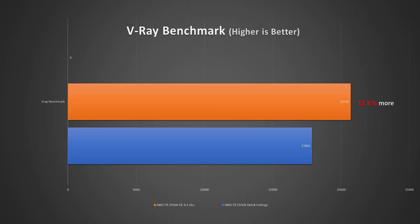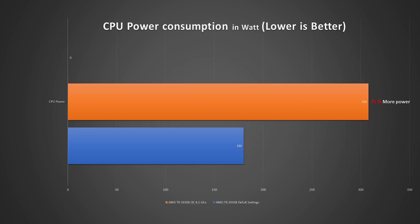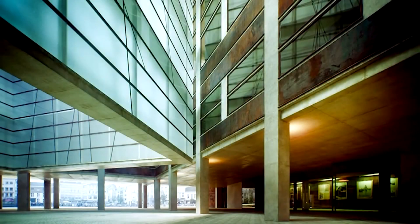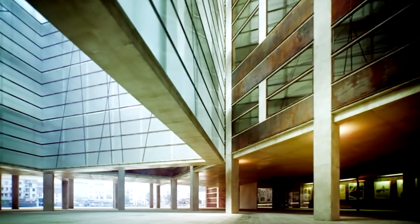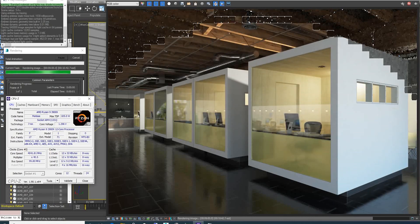Now let's see the results and make the final conclusions. For the VLA benchmarking results, we got 15.8% more performance after overclocking our CPU, and that reflects in the real-world scenario where we got 16% faster rendering speed in our interior scene test. But the bigger issue is the CPU power consumption chart — our CPU drew 71% more power after overclocking, which is very inefficient because the CPU is consuming a lot of power to generate only 16% more performance.